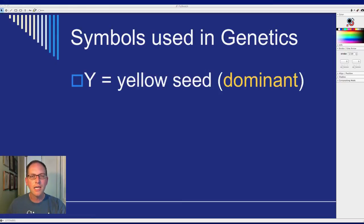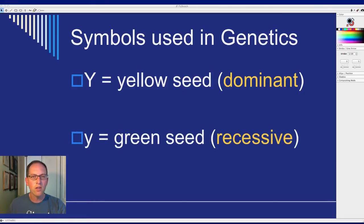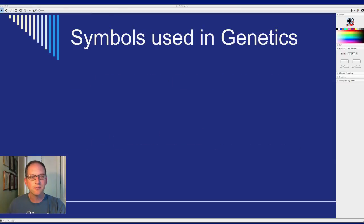Now we're going to change the symbols we use in genetics. From now on, capital letters represent the dominant allele — in this case, capital Y will be the yellow seed dominant — while the lowercase letter will be the recessive allele, in this case representing green seed.